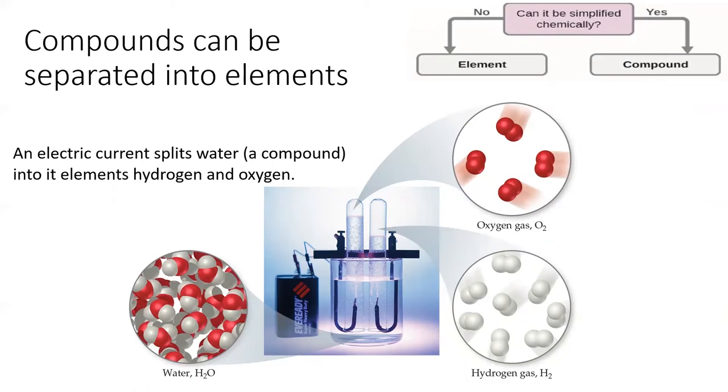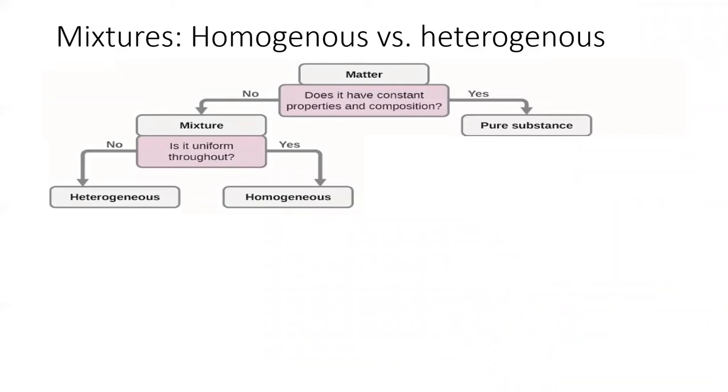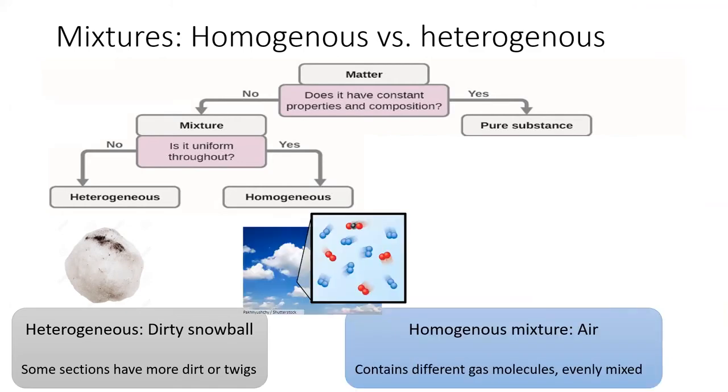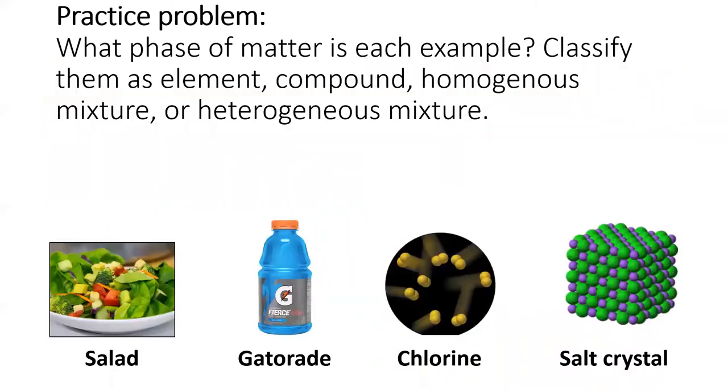If we return to mixtures, we can further divide them by asking the question, is the mixture uniform throughout? A heterogeneous mixture, like our dirty snowball, is not uniform throughout. Some sections may have more or less of one substance. On the other hand, a homogenous mixture has all of its compounds evenly mixed together. A good example of a homogenous mixture is air, which is composed of a mixture of different gases. But no matter where we look, the gases are mixed evenly together. It's not like one section of a room could contain lots of oxygen, and another section of the room contains far less.